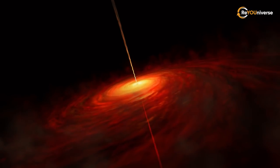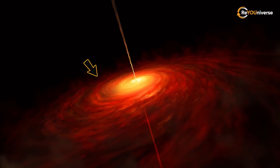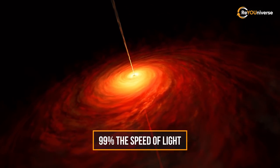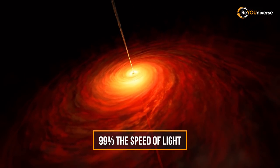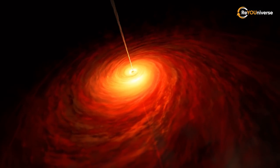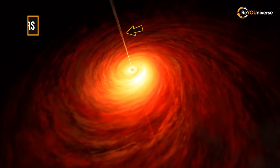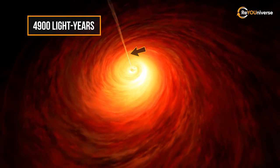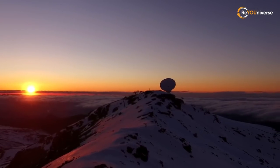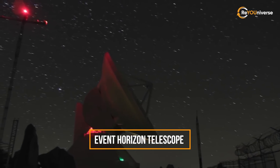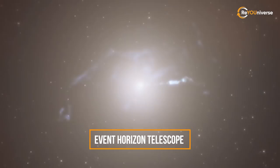An accretion disk of ionized gas orbits this black hole with a jet escaping at 99% the speed of light. The jet of incandescent plasma extends for at least 4,900 light-years. It was this black hole that a set of radio telescopes from the Event Horizon Telescope Project captured in 2019.